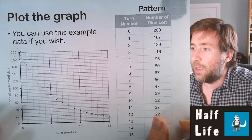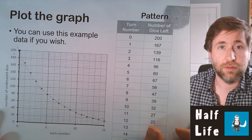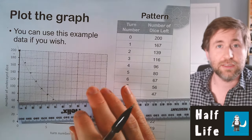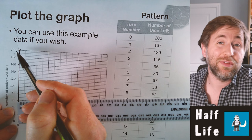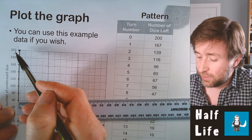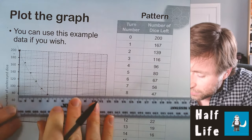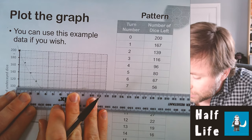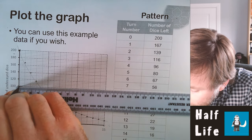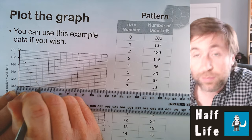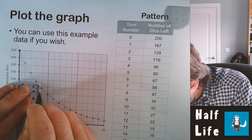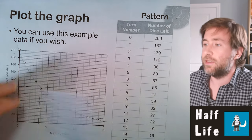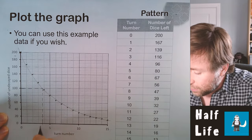Now I'm going to use that graph to work out a half-life for these dice. Whatever value the line cuts the y-axis at the start — say 200 — halve that number to get 100. Note that 100 is not the half-life, as some people mistakenly think. Draw a line across to the line of best fit — not to the points — and then down to the x-axis. That value is the half-life.